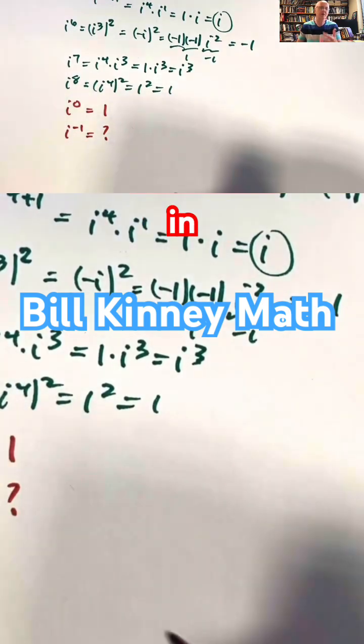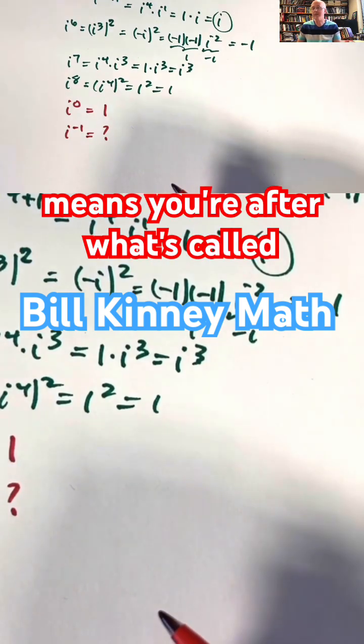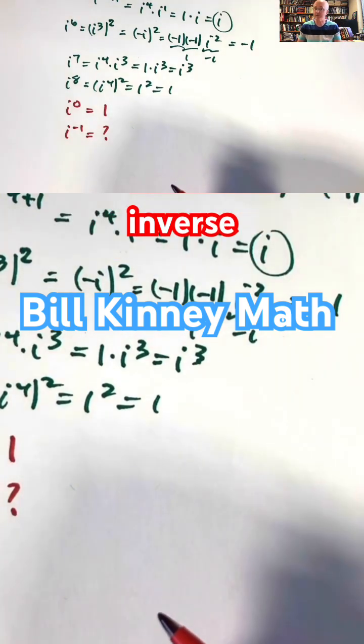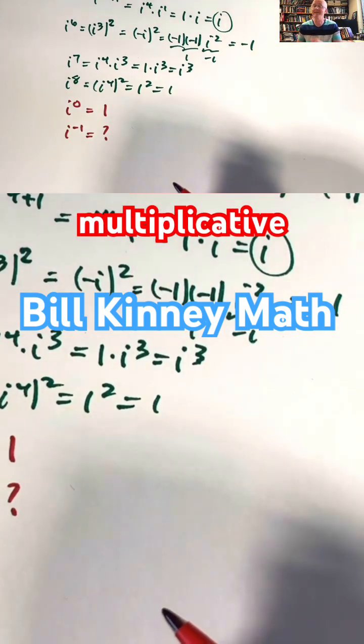Well, what in general does it mean when you raise a non-zero number to the negative 1 power? It means you're after what's called its multiplicative inverse, the thing to multiply it by to get positive 1, the multiplicative identity.